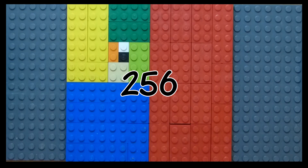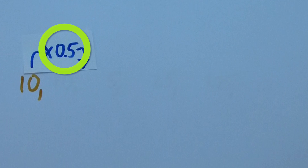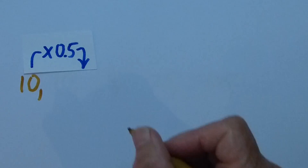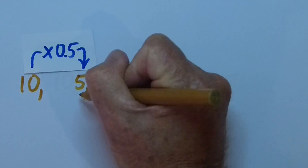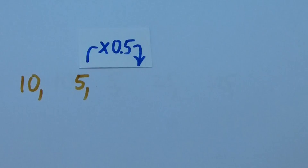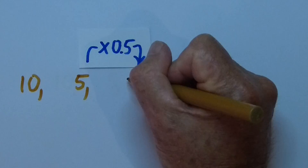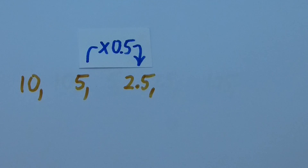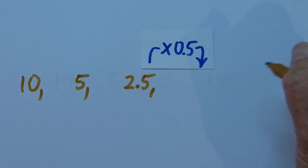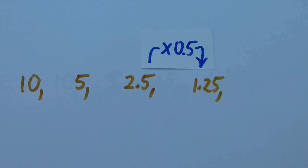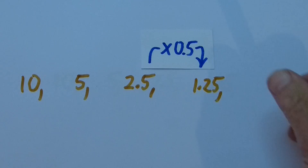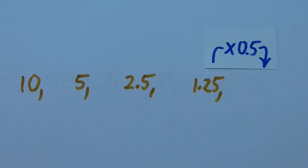The common ratio can be less than 1. Start at 10, by half is 5, by half again is 2.5, by half again is 1.25, and so on.